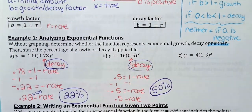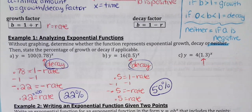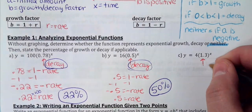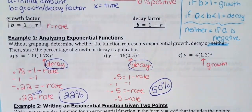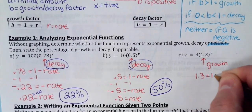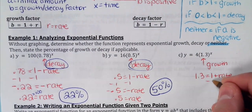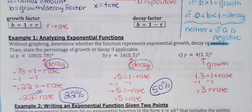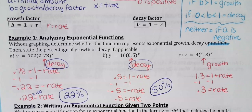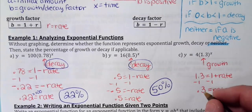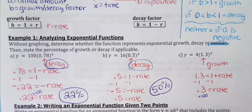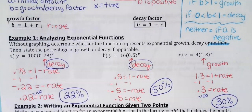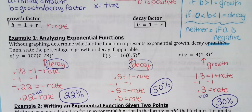For 4 times 1.3 to the x: the 1.3 is greater than one, so this is growth. For growth, the b value is one plus the rate. So 1.3 equals one plus the rate. Subtract one and you get 0.3 as the rate. Multiply by 100 — this is 30% growth. Whatever you are over one, multiply by 100 to get your percent.